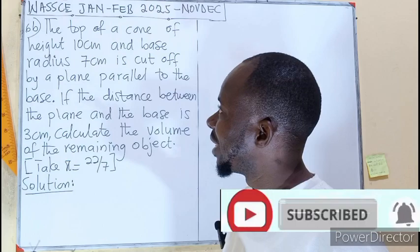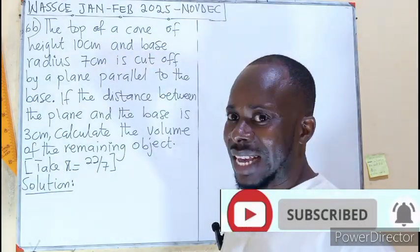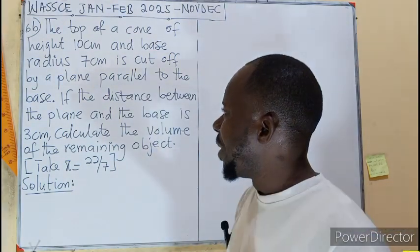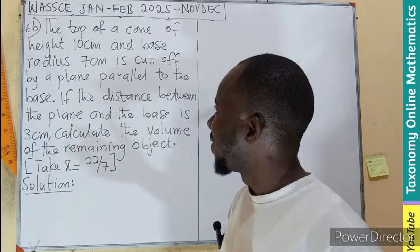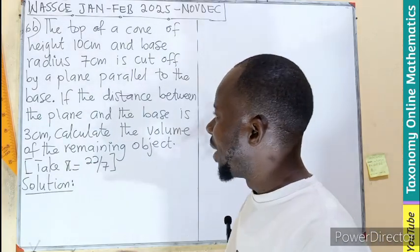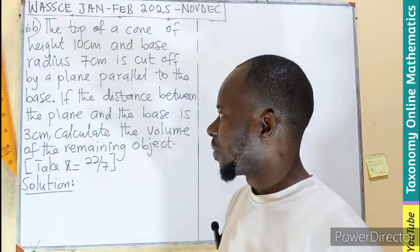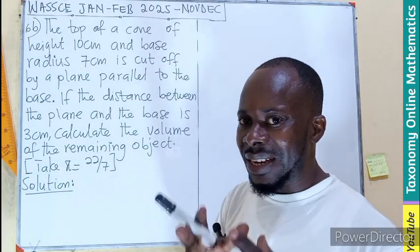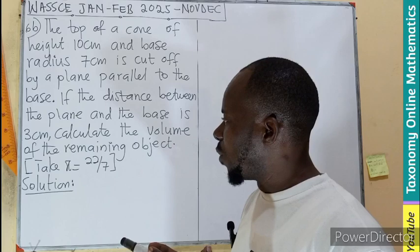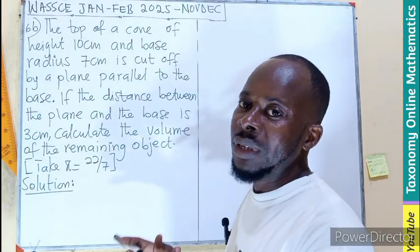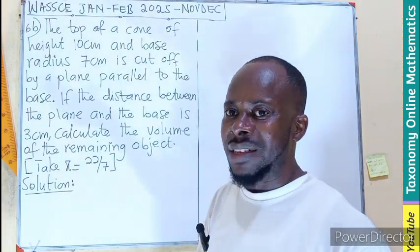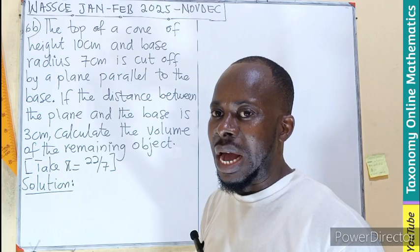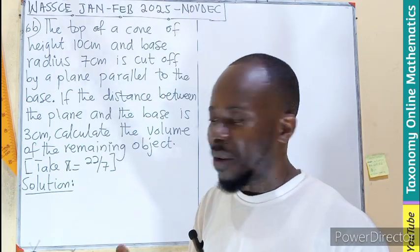This question says the top of a cone of height 10 cm and base radius of 7 cm is cut off by a plane parallel to the base. If the distance between the plane and the base is 3 cm, we are calculating the volume of the remaining object. If we take a cone and it is cut off, what remains becomes a conical frustum.